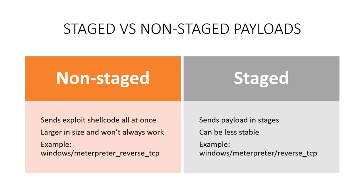There are two main types of payloads that we need to pay attention to: non-staged and staged. A non-staged payload sends the exploit shellcode all at once, where a staged payload sends it in stages. The non-staged payload is larger in size and it doesn't always work, where the staged payload can actually be less stable. So each has its con.